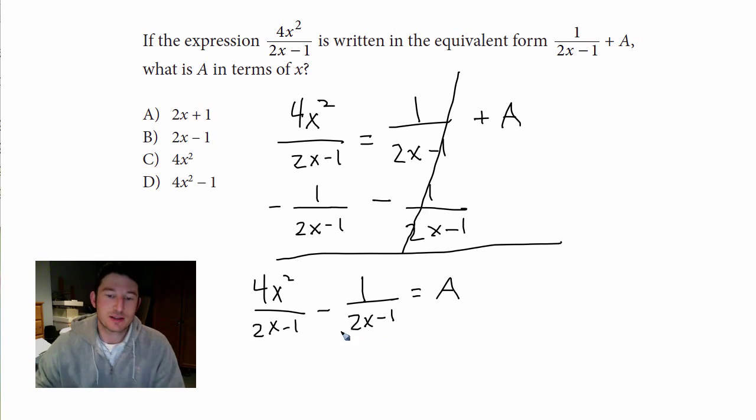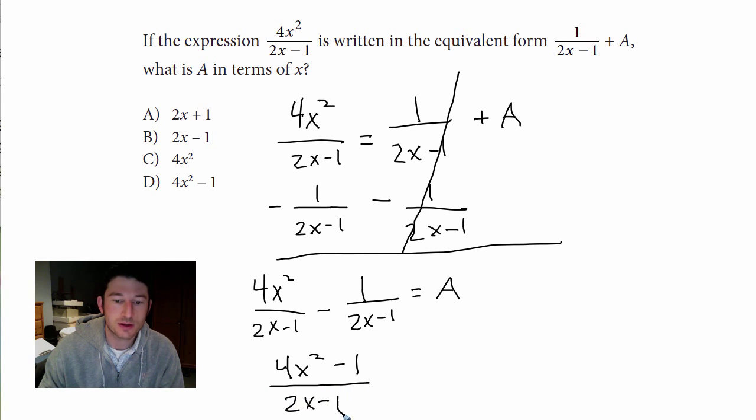Alright, so they got the same denominator so I can just clean this up. I'll just subtract the tops. 4x squared minus 1 all over 2x minus 1. And I'm just going to move this over here.